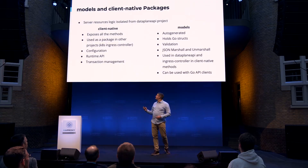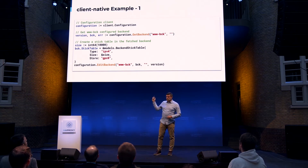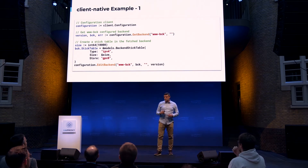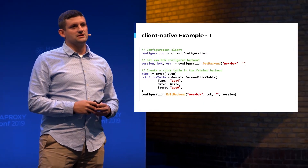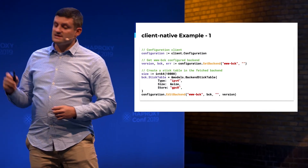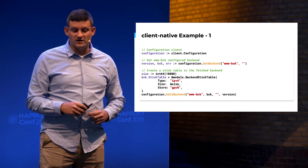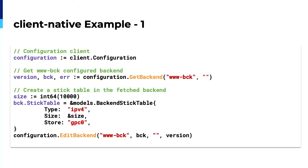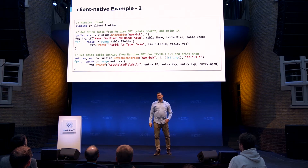Here's an example of how you can use client native in your own Go application — I've skipped init functions and error handling for brevity; you can find all of that in the README on our GitHub. In the first example, we get the 'www' backend from the configuration file using the GetBackend function, which returns the config file version and the backend instance. We then edit it by adding a stick table line to that backend using the EditBackend function. In the second example, we use the runtime client within client native.